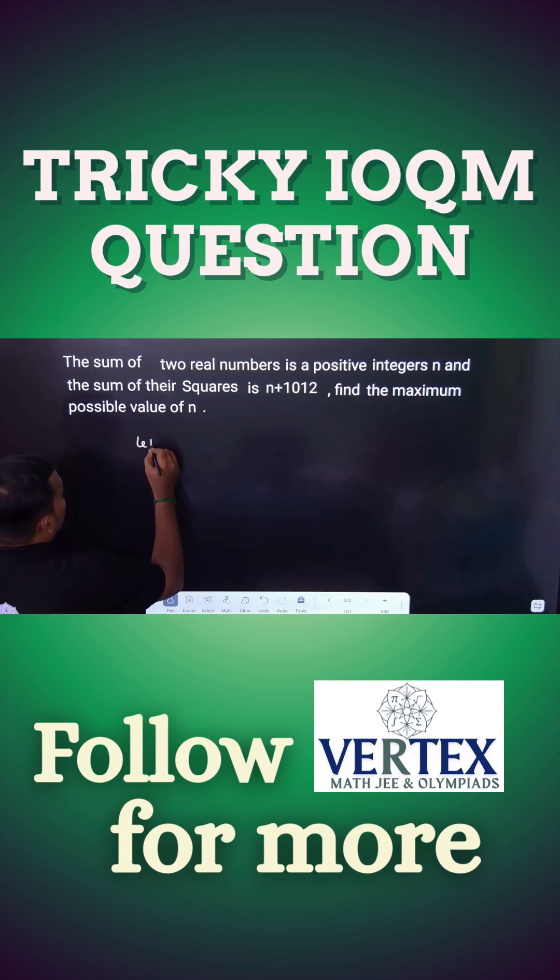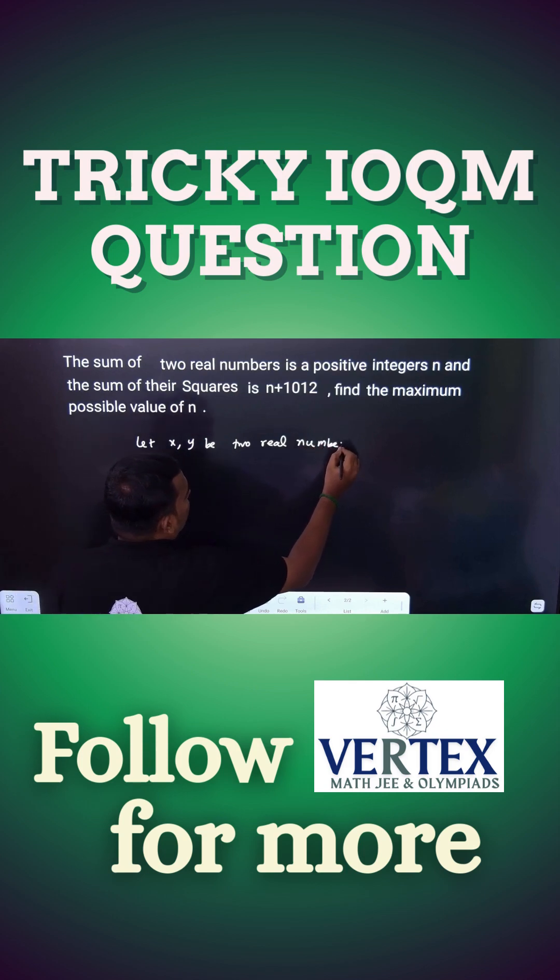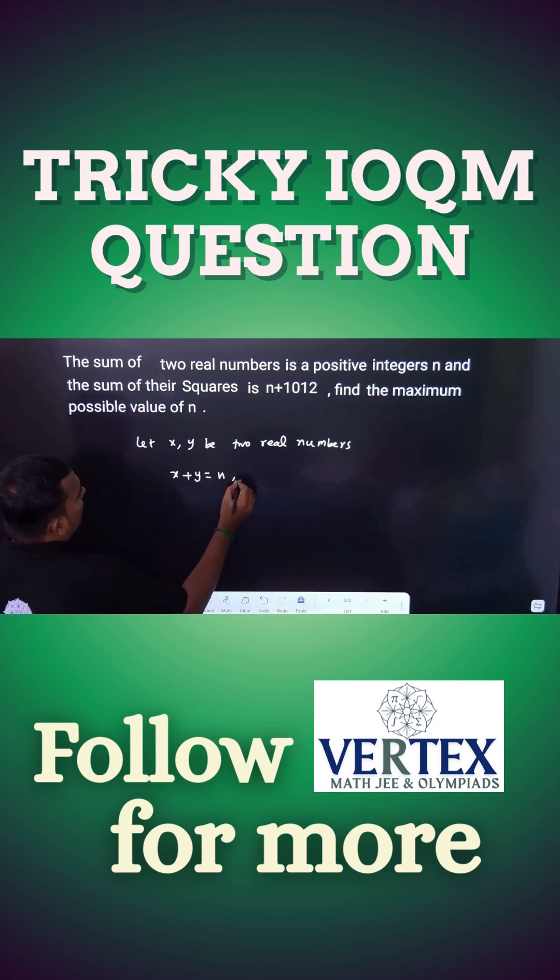Let us take two real numbers, let x and y be two real numbers. What does the first statement say? x plus y is equal to n, n belongs to positive integers. And then the second thing, the sum of the squares, x square plus y square is equal to n plus 1012.